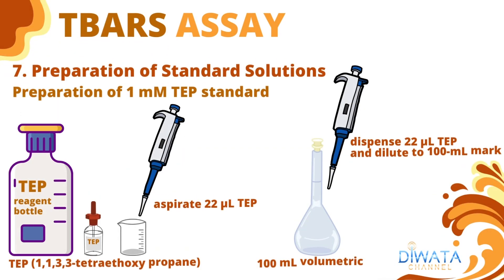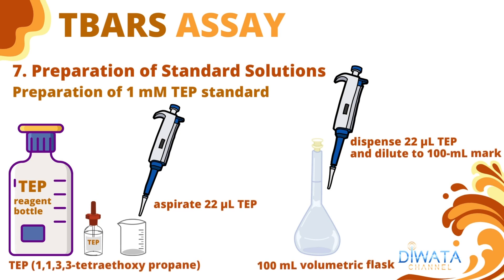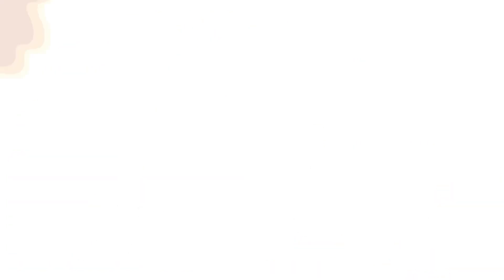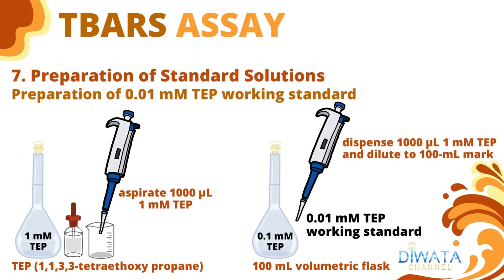In our standard curve determination, we will be using 1 millimolar TEP as our standard solution. To prepare this, we need to aspirate 22 microliters of TEP and dilute to a 100 ml volumetric flask using distilled water. We will then prepare our working solution by diluting it 100-fold to achieve 0.01 millimolar TEP as our working standard concentration, by diluting 1,000 microliters of 1 millimolar TEP to a 100 ml volumetric flask using distilled water.